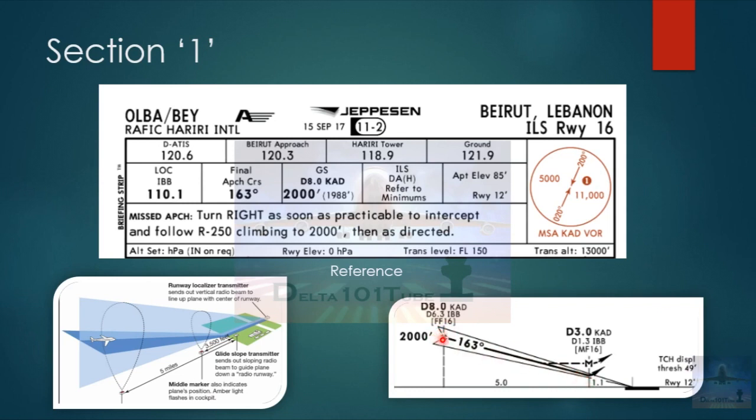It shows that the glide slope starts at the final approach fix, which starts at 8 nautical miles from Kilo Alpha Delta and 6.3 miles from India Bravo Bravo. Flying down the ILS at a course of 163 degrees will reach a point called decision height. At decision height, you've got to make a decision of whether to land or not. If you can land, you continue the approach. If not, you declare a missed approach and go around.